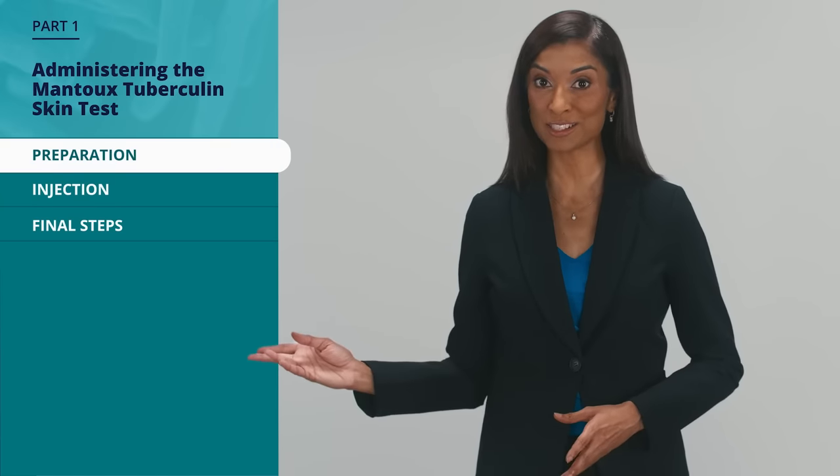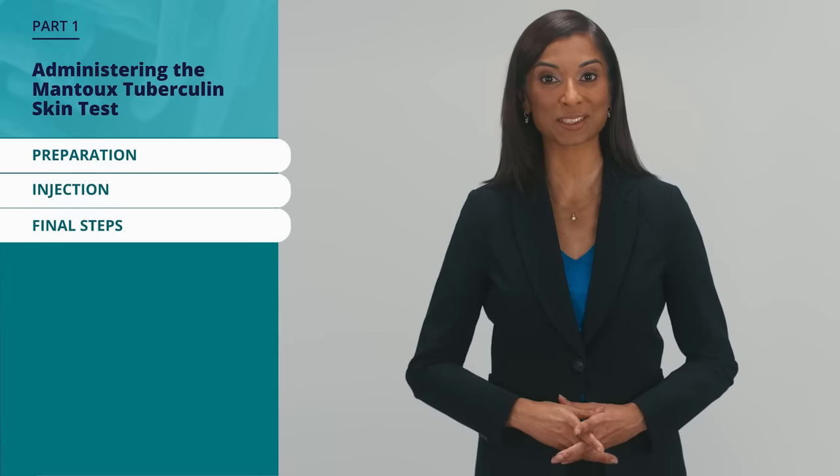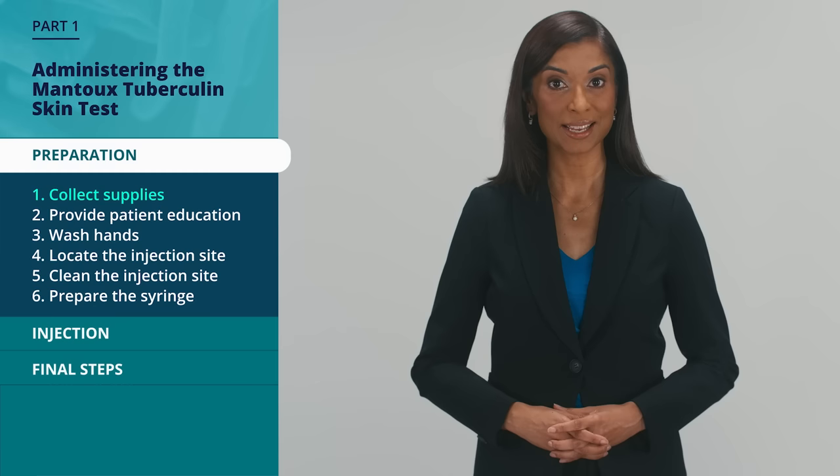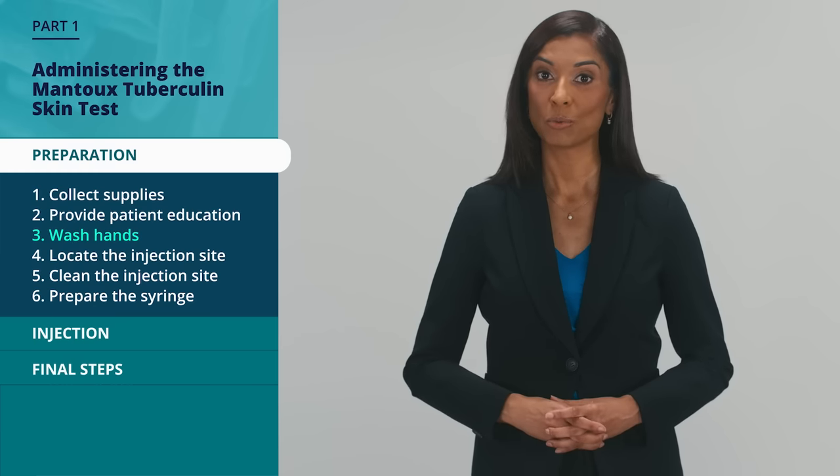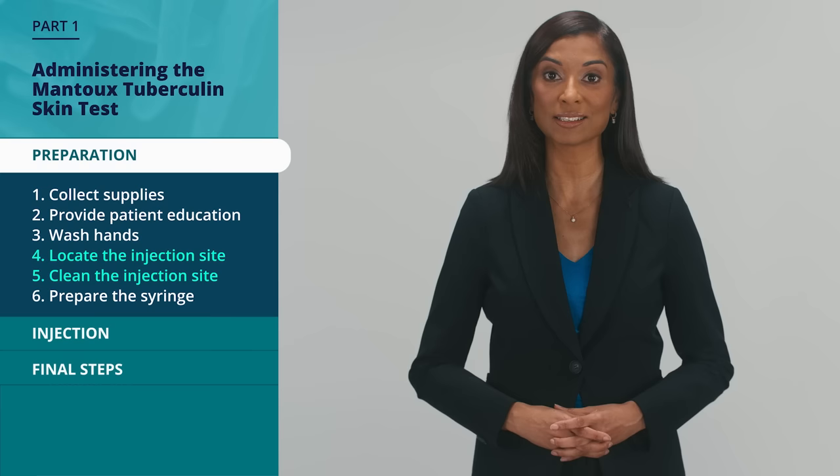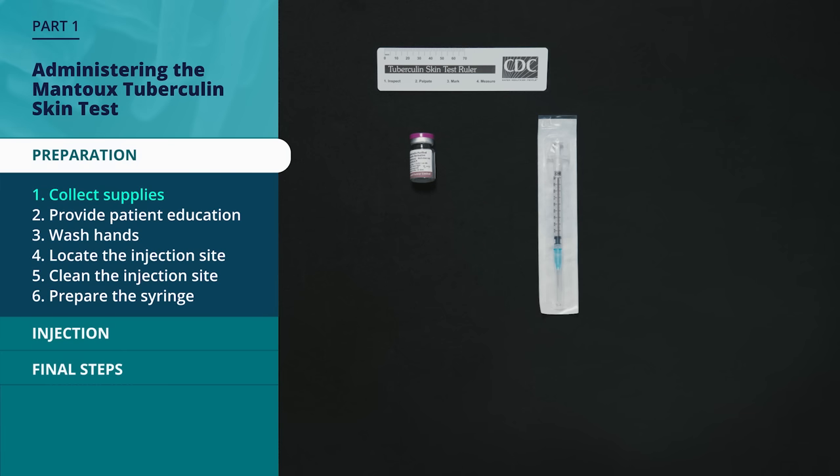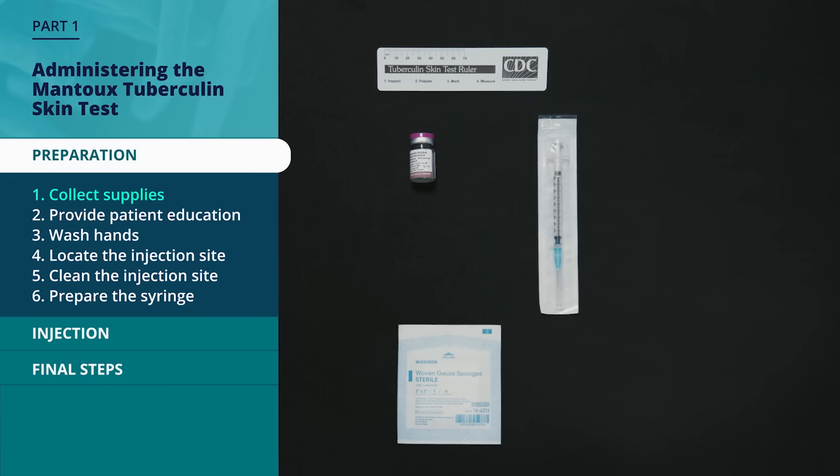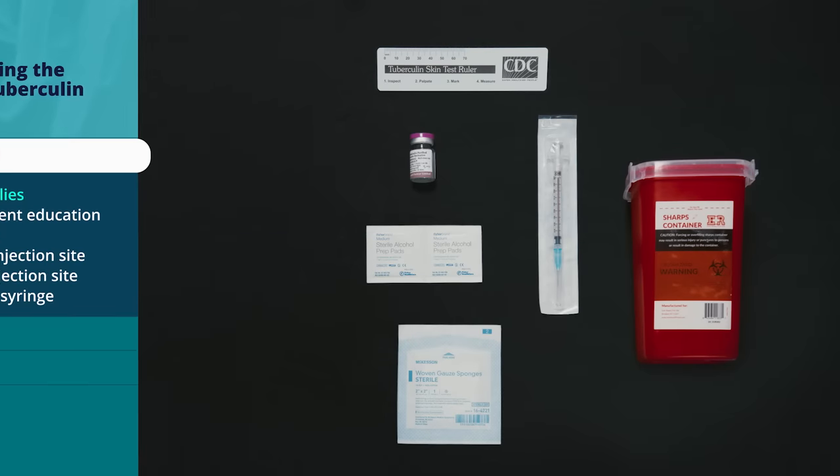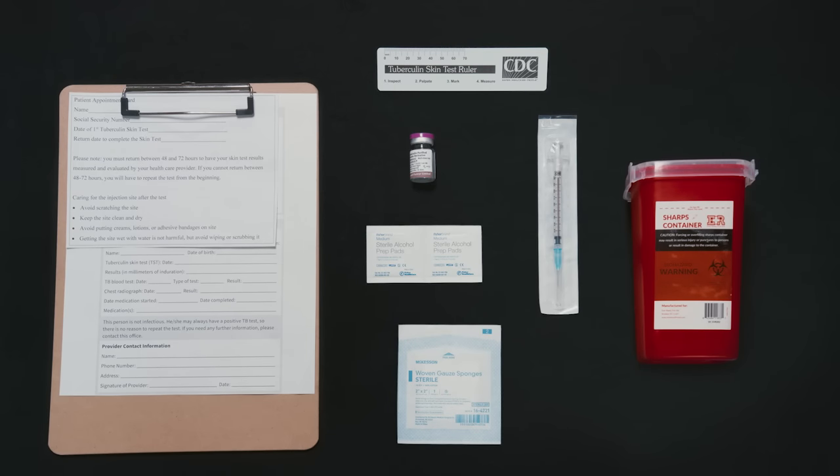The two main parts include administering and reading the skin test. This part of the procedure includes preparation steps, injection steps, and final steps. The preparation steps include collecting supplies, providing patient education, washing your hands, locating and cleaning the injection site, and preparing the syringe. Supplies should include a vial of tuberculin, a single-dose disposable tuberculin syringe, a ruler with millimeter measurements, 2x2 gauze pads or cotton balls, alcohol swabs, a sharps disposal container, record-keeping forms for the patient and provider, and a pen.